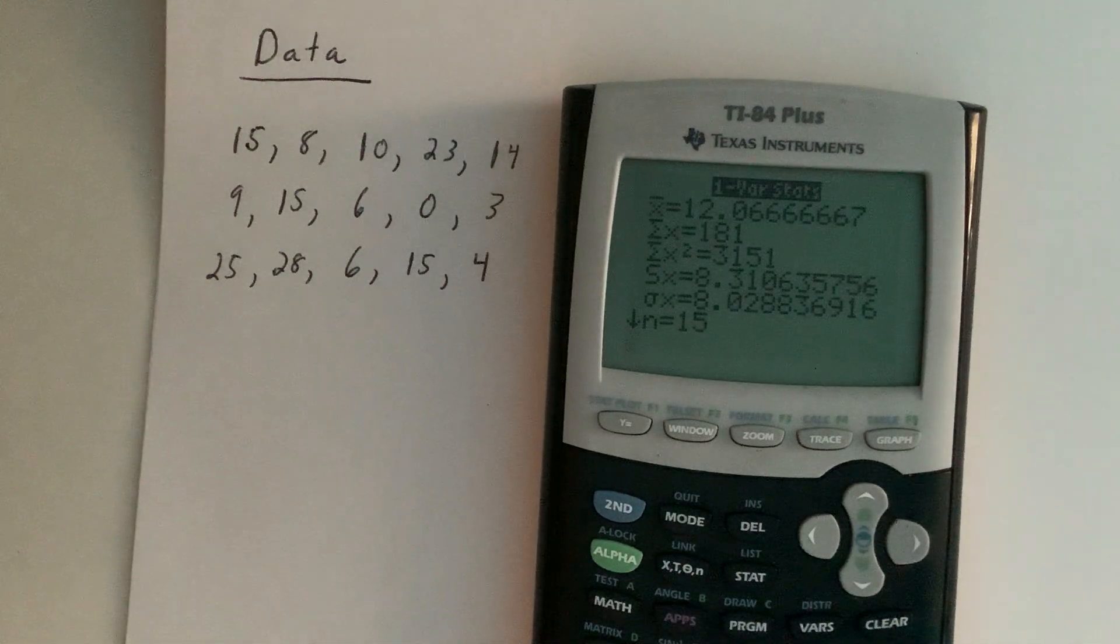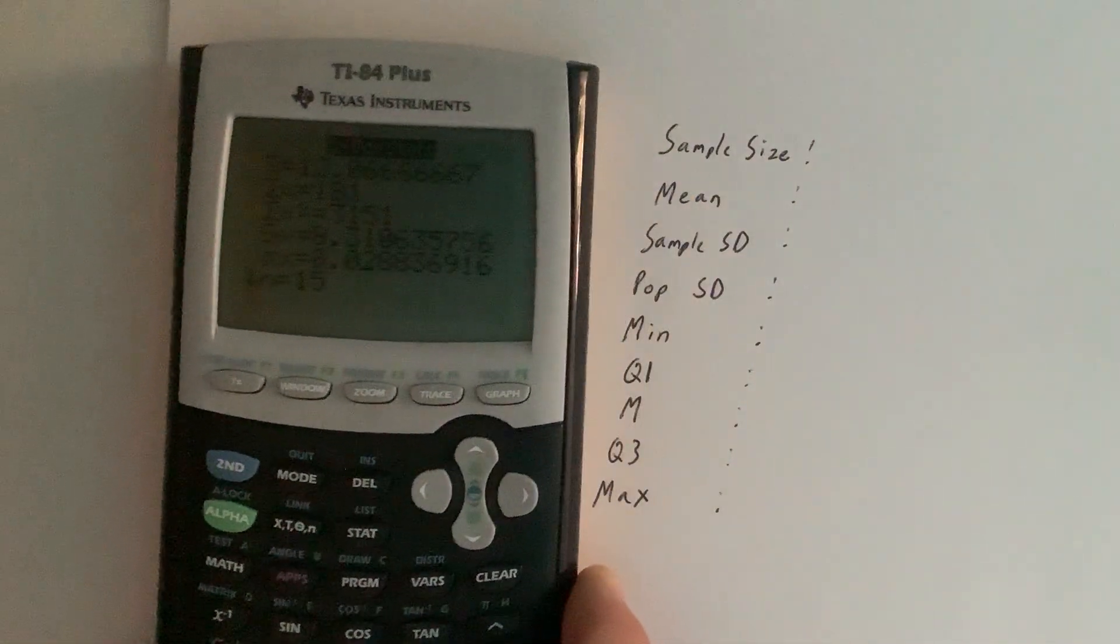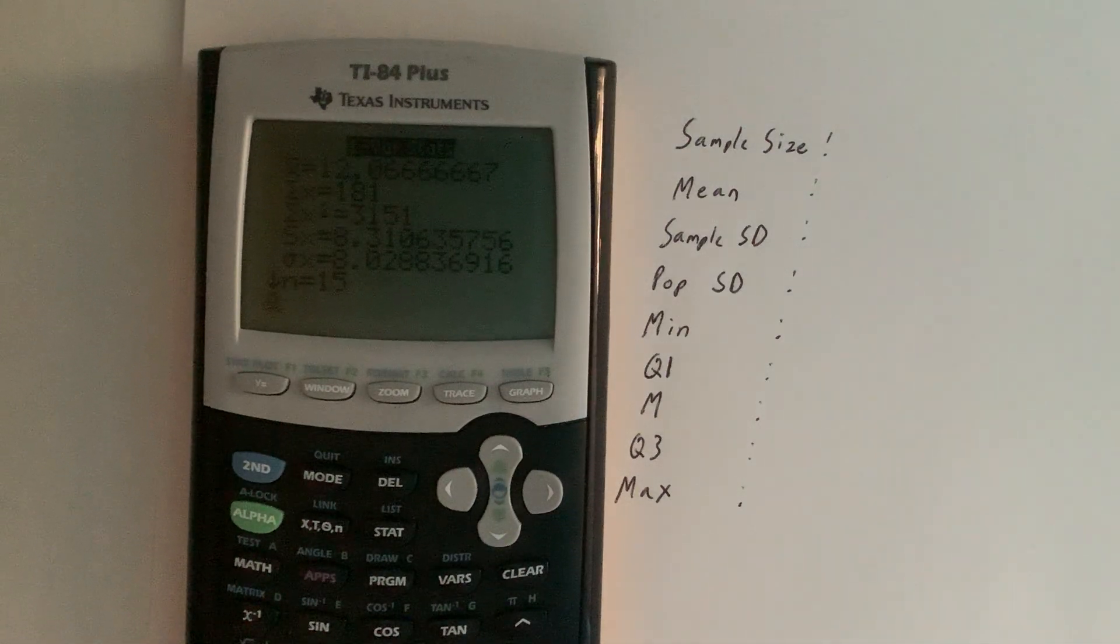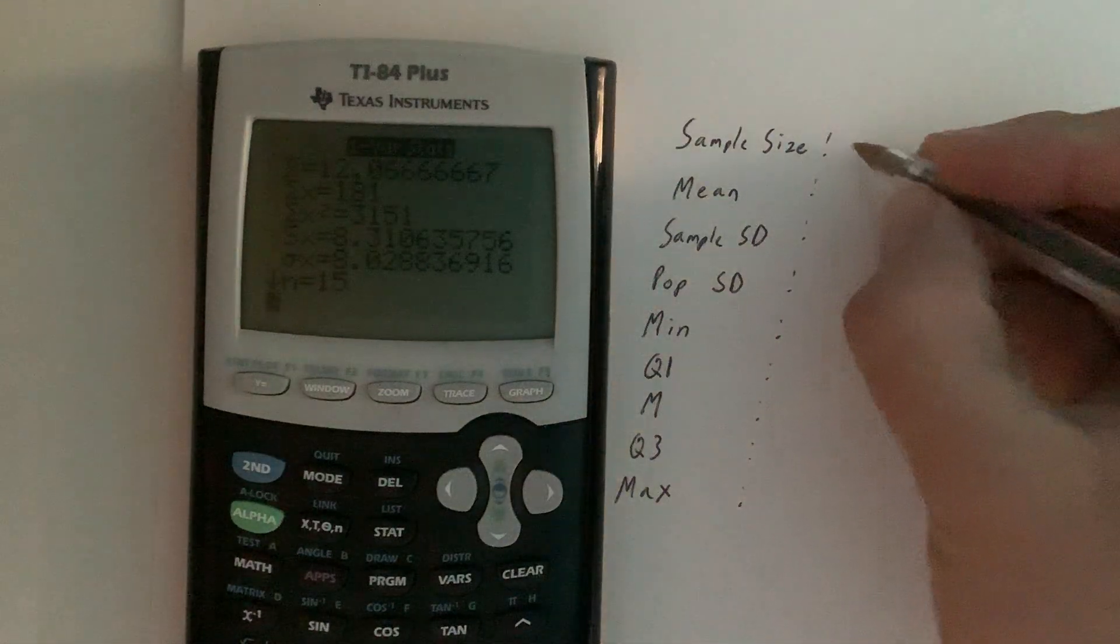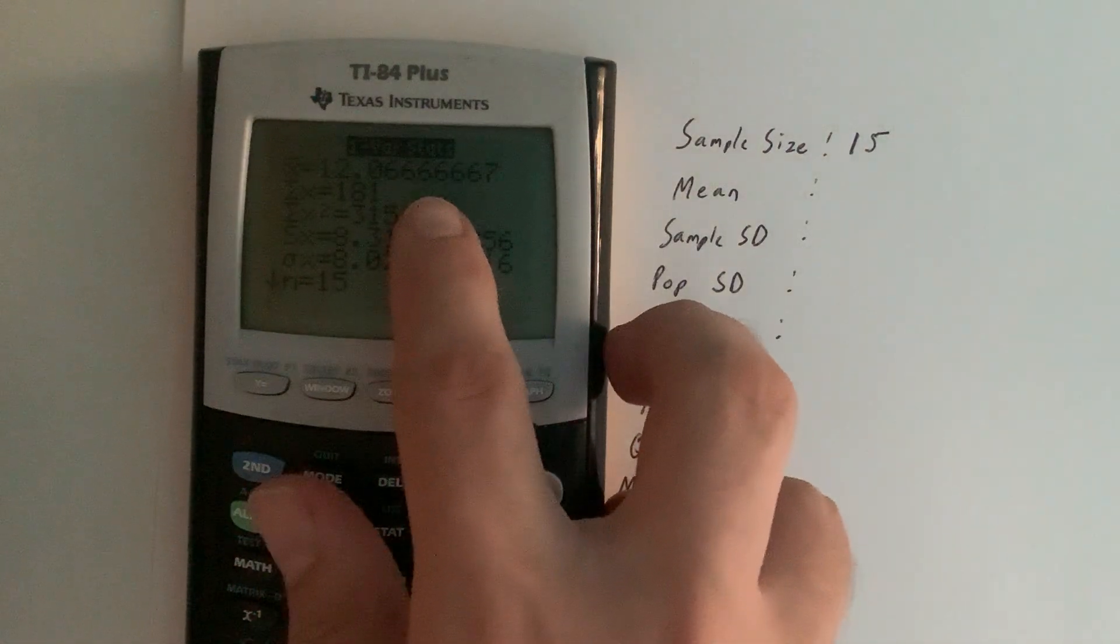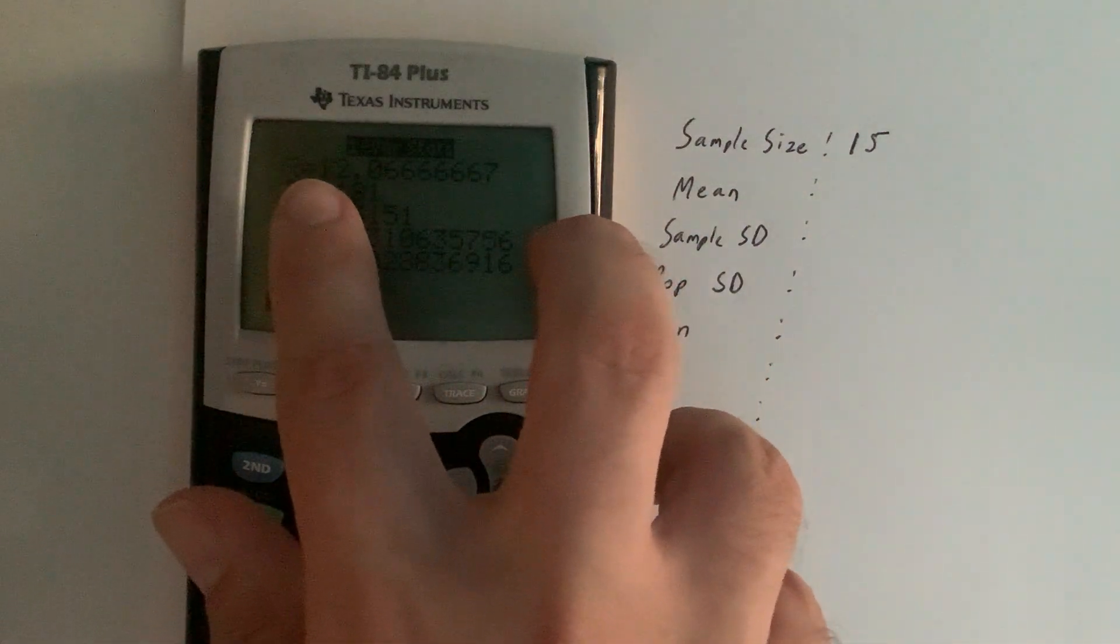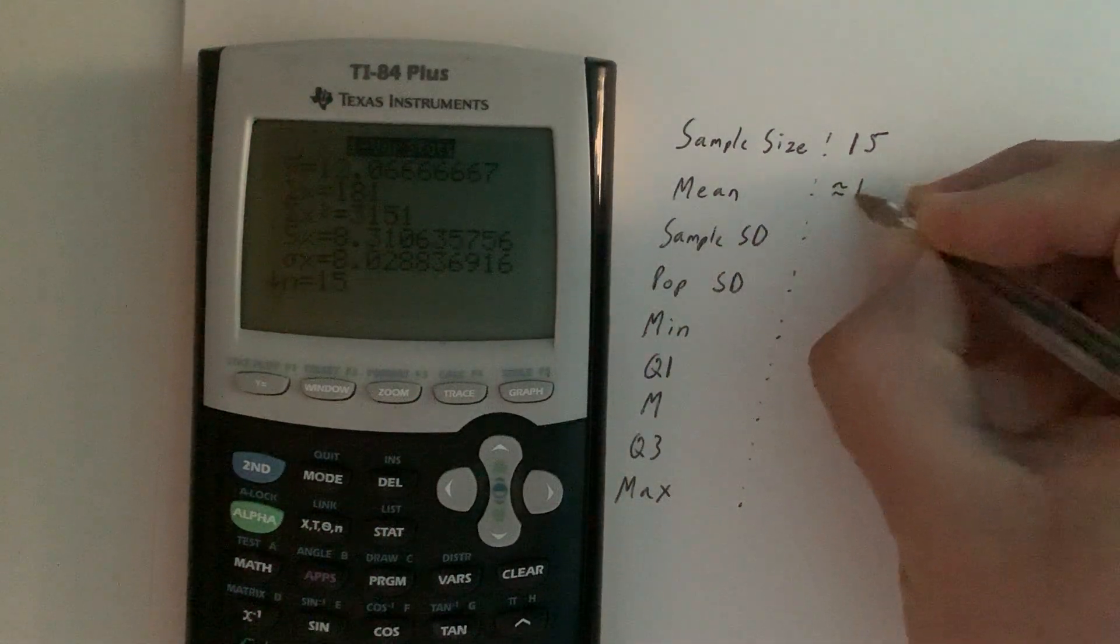It should take a moment and then compute a bunch of things. Let's take a look at the things that we'll be using for our class. The sample size—the notation for sample size is n, and you can see n is located right there, n equals 15. The mean, we can find that at the top right there, it's that 12.066667. Notice the notation is x-bar there. We can round that and say the mean here is approximately 12.1. Sample standard deviation, the notation for that is s, so we can find that right there, approximately 8.3.